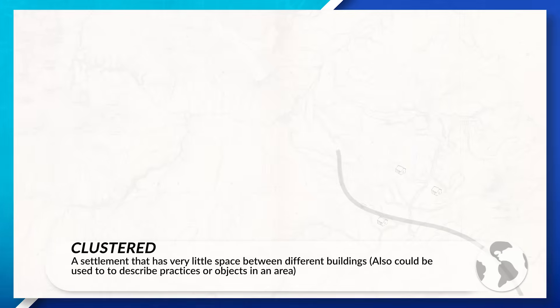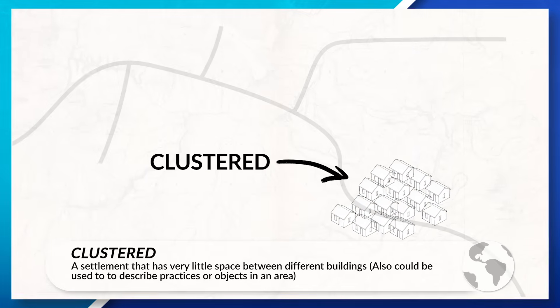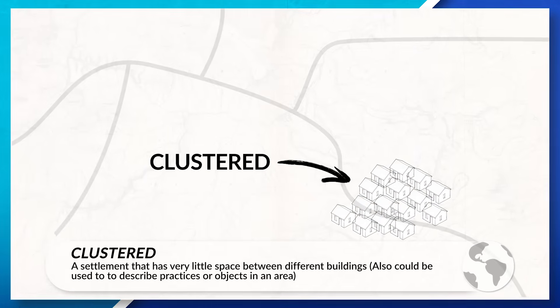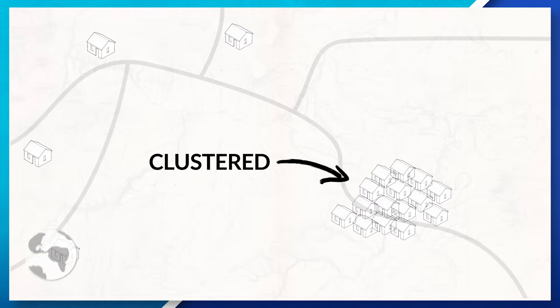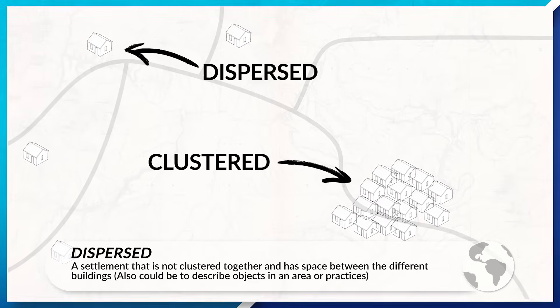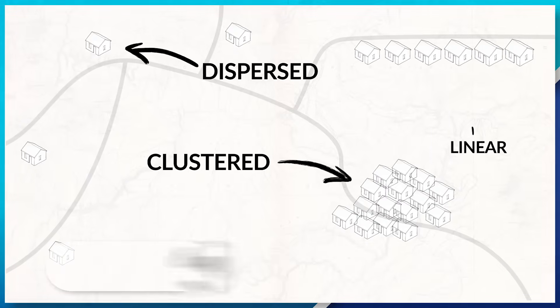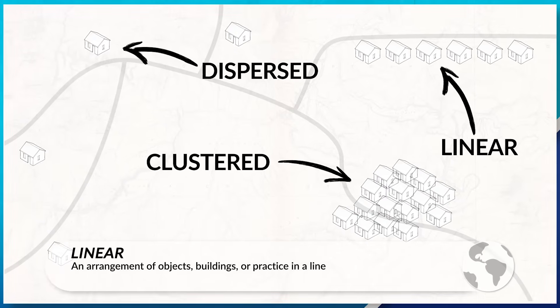Let's review clustered, dispersed, and linear patterns, concepts we talked about earlier in this course. When talking about a clustered settlement or a clustered agricultural practice, there's very little space between the items or practices. Dispersed means that there is space between the different settlements, items, or practices. And if it's a linear pattern, it means the arrangement of the objects or practices are in a line.